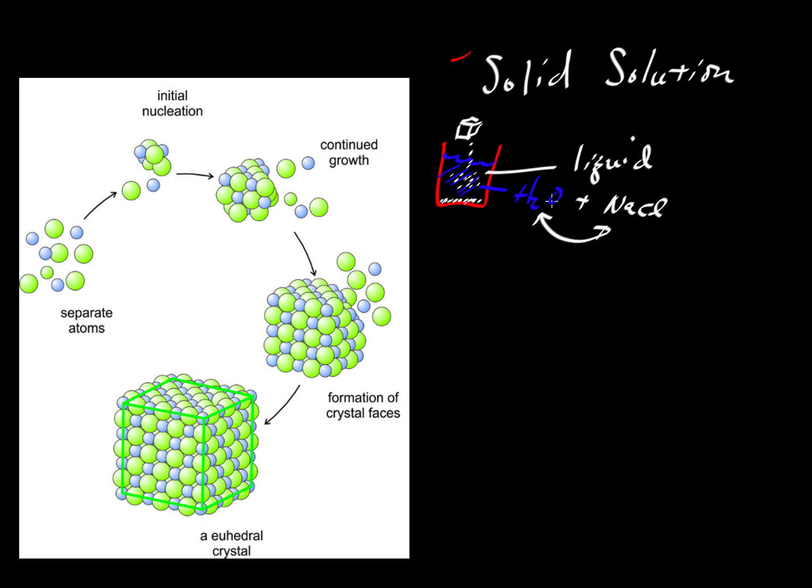Well, what we did with liquids we can also do with solids. So here's a very nice diagram by Dexter Perkins in his online textbook on mineralogy. The blue atoms here and green atoms are going to come together to nucleate and grow a crystal, and if we follow the arrows we end up here and we end up with this crystal, which is again a single phase.